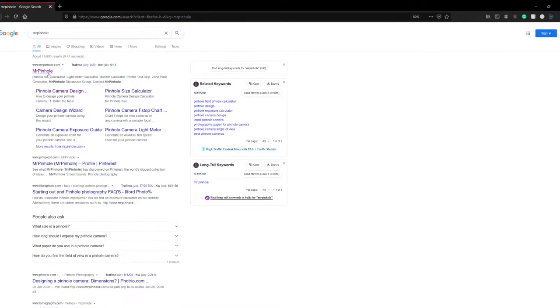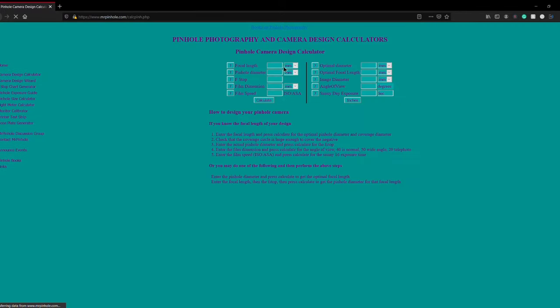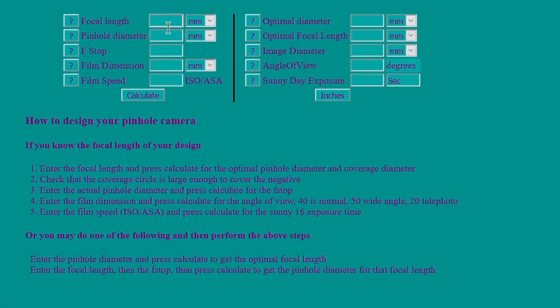I used mrpinhole.com and I typed in the figures for the focal length, the pinhole diameter, and the film dimension and film speed which is ISO 5, which is slow but it's the speed of paper, and I got all the figures that I needed.